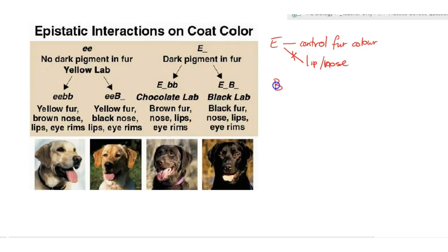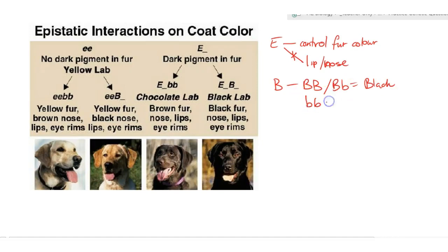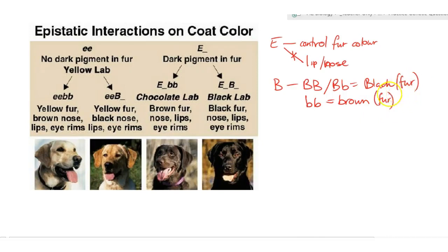The B gene: if it's big B or big B little b, the fur and nose will be black. If it's the recessive version, little b little b, it's going to be brown — and the same applies to the nose and lips, which will be black or brown accordingly.